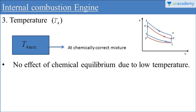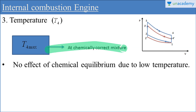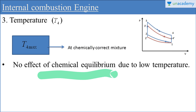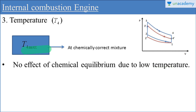The next point is temperature T4, also called the exhaust temperature — the temperature when the exhaust stroke starts. This exhaust temperature is always maximum at the chemically correct mixture. If we consider a lean mixture, less combustion takes place, resulting in less temperature. If we consider a rich mixture, incomplete combustion takes place, which also decreases temperature due to carbon monoxide formation. There is no significant effect of chemical equilibrium at low temperature. So T4 is maximum at the chemically correct mixture.